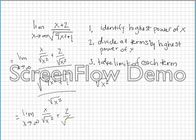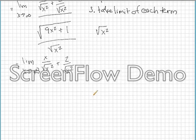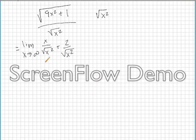The top stays the same. And the bottom all gets put under one square root. So it just becomes 9x squared over x squared plus 1 over x squared.